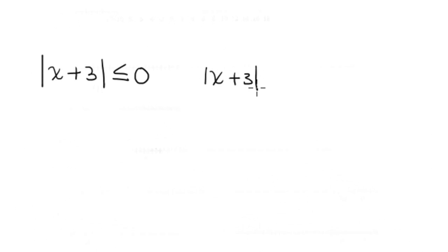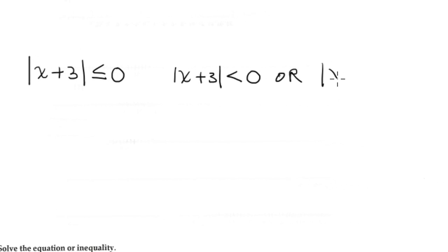One is a strict inequality, and the other is an equation, because basically this sign is a combination of less than or equal.